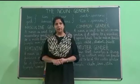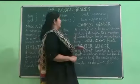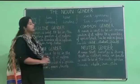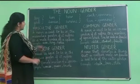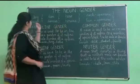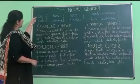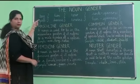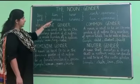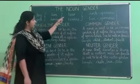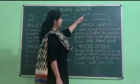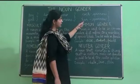Today we are going to learn the noun gender. Children, please have a look at these four pairs on the board: Boy, Girl, Lion, Lioness, Hero, Heroine, Cock Sparrow, Hen Sparrow.